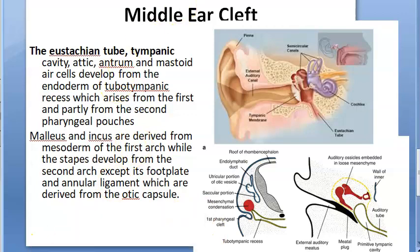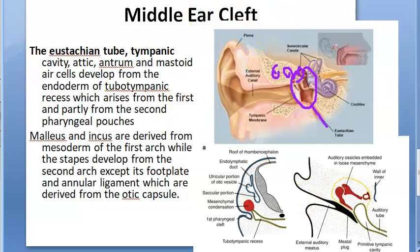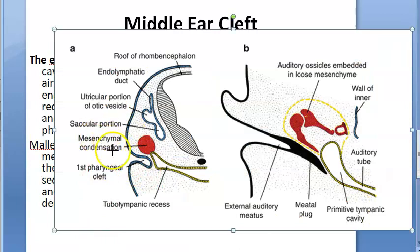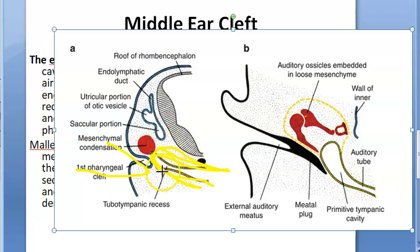Now let us see how the middle ear cleft develops. The eustachian tube, tympanic cavity, attic, antrum, and mastoid air cells all develop from the endoderm of the tubo-tympanic recess. This tubo-tympanic recess comes from the first and partly from the second pharyngeal pouch - remember, from inside is the pouch. So the first pouch and partially the second pouch form the tubo-tympanic recess, tympanic cavity, and air cells.